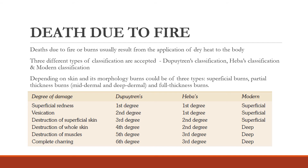The degrees of damage are most important. They are: (1) superficial redness, (2) vesication or blister formation, (3) destruction of superficial skin — epidermis and dermis, (4) destruction of whole skin down to the subcutaneous layer, (5) destruction of muscle, which will not blanch on pressure, and (6) complete charring. In Dupuytren's classification, all six degrees are mentioned.